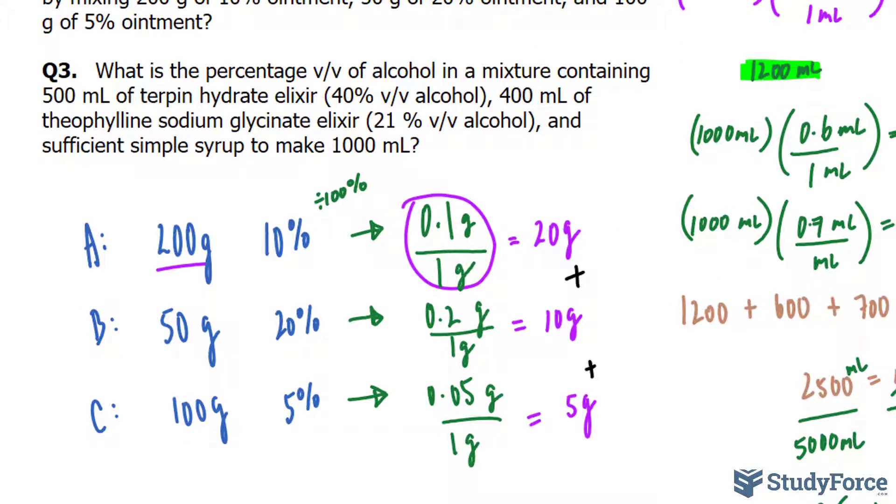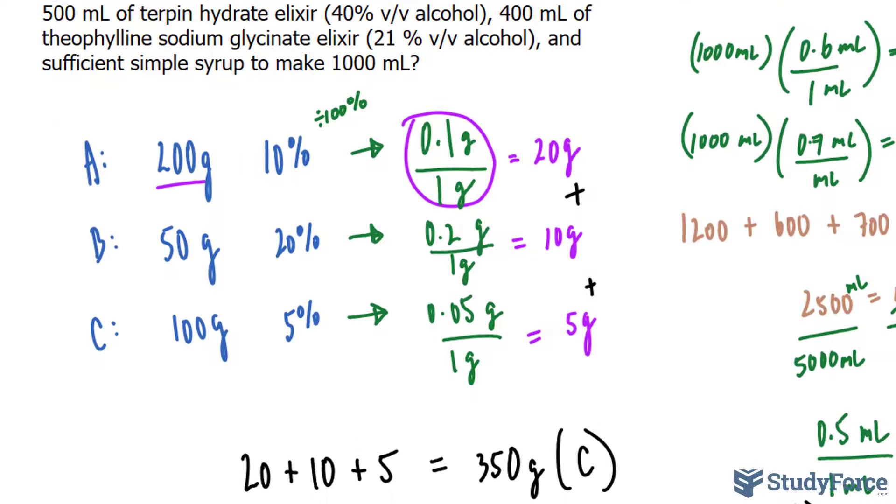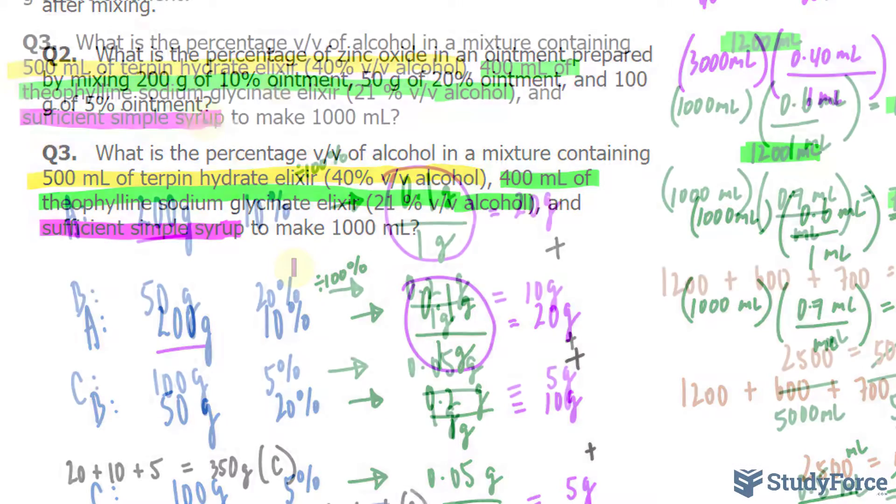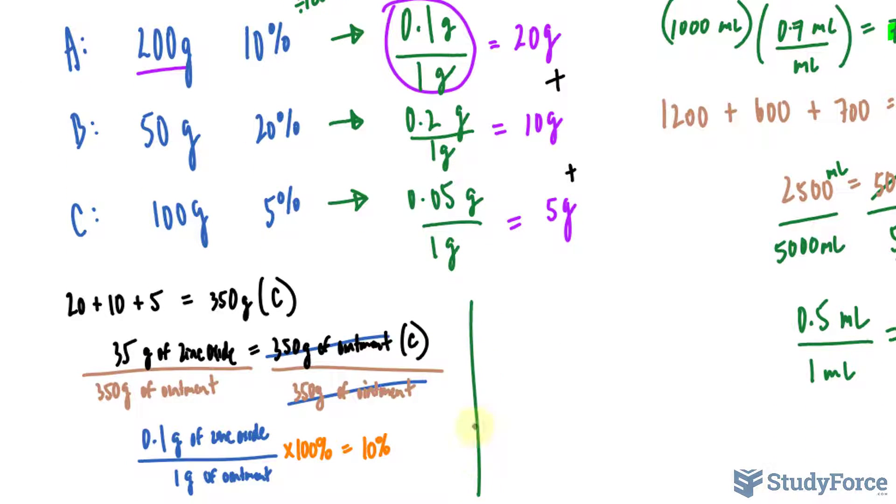Let's move on to question number three. What is the percentage volume per volume of alcohol in a mixture containing 50 milliliters of turpin hydrate elixir, and it has a concentration of 40% volume per volume alcohol, 400 milliliters of theophylline sodium glyconate elixir, which is 21% volume per volume alcohol, and sufficient simple syrup to make 1,000 milliliters. All right, so here we have three parts. We have part A being what I'm highlighting in yellow, part B in green, and part C is this simple syrup. Notice that the simple syrup is somewhat of a dilutant where it doesn't have any alcohol at all.